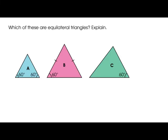Which of these are equilateral triangles? Do you remember the definition? An equilateral triangle has three sides of equal length. Look at this — they have equal angles and equal sides. The blue one and the pink one are the equilateral triangles, so the answer is A and B.